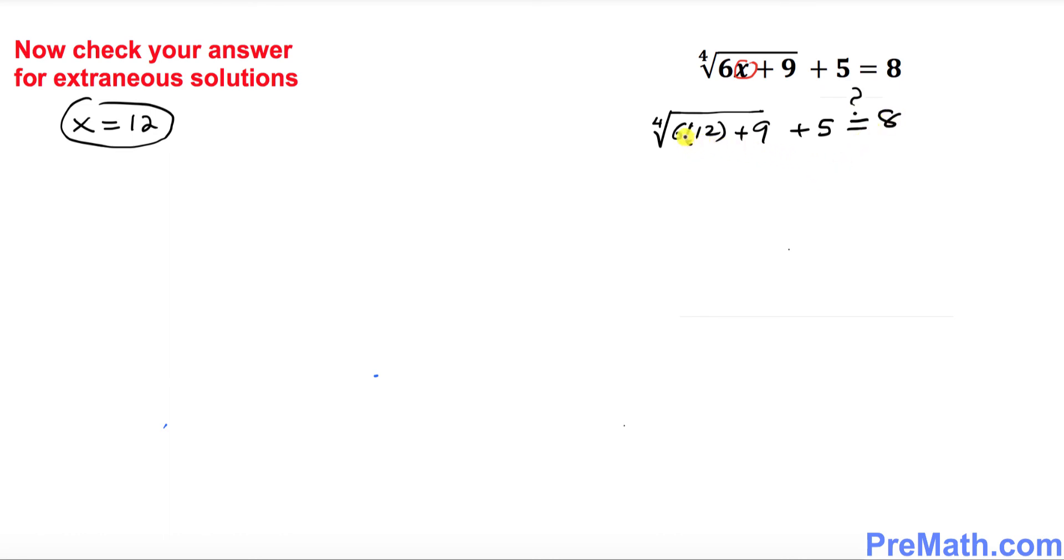Let's see what happens. 6 times 12 is 72, plus nine, the fourth root, and then plus five equals to eight.